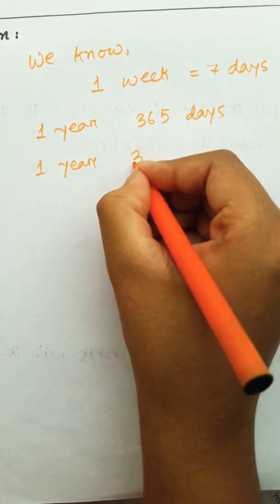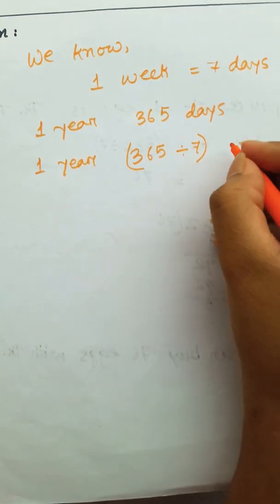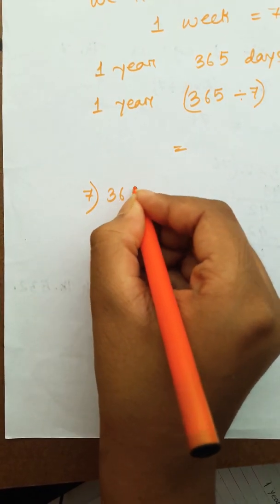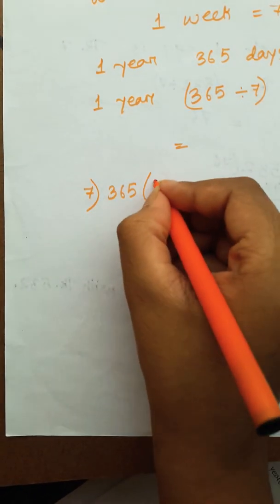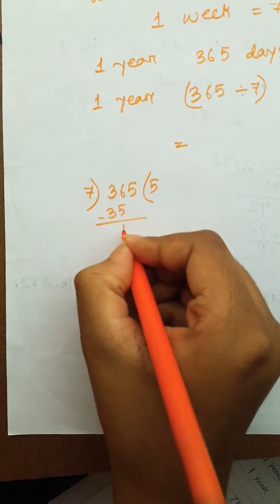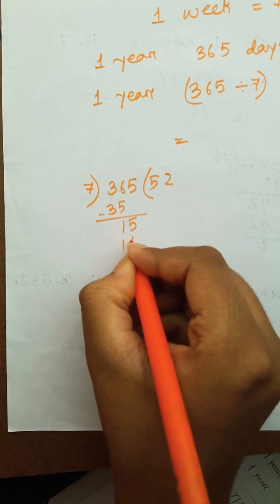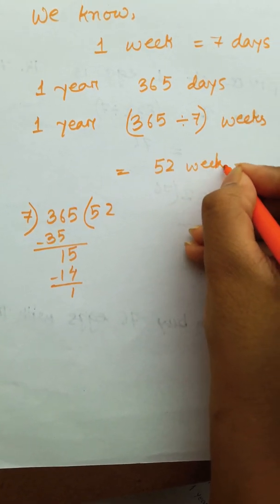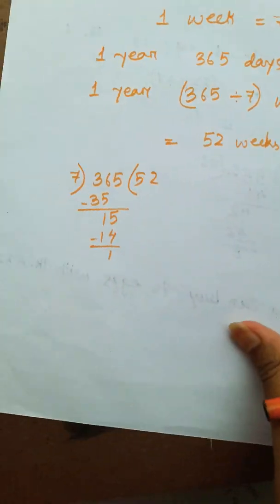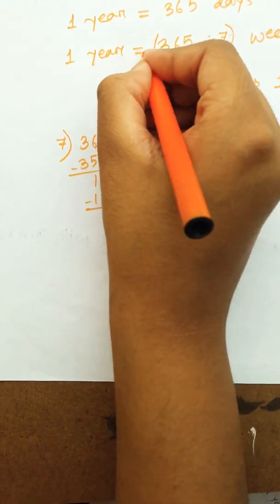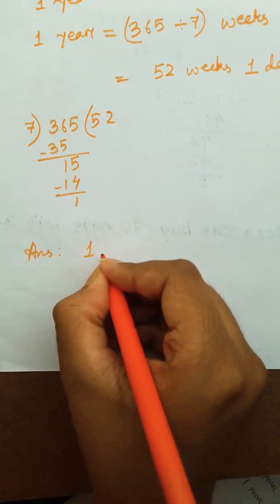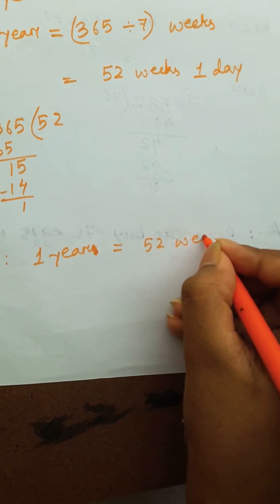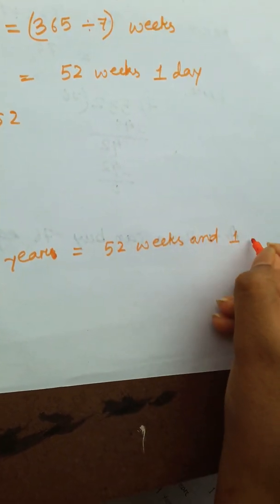1 year is 365 days. So 365 divided by 7 gives us the number of weeks in a year — that is 52 weeks and 1 day remaining. Okay.